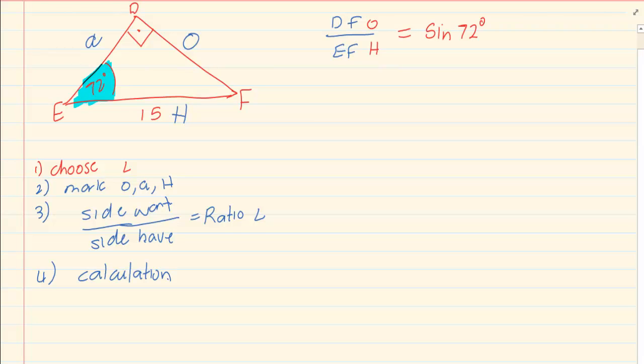Now substitute what we have. We don't have DF. But I have EF which is 15. Now we are going to calculate. So I am going to multiply by 15 to basically get my DF alone. Then it is simply putting it into your calculator. So we are going to press 15 sin 72, which gives us DF is equal to 14.27.